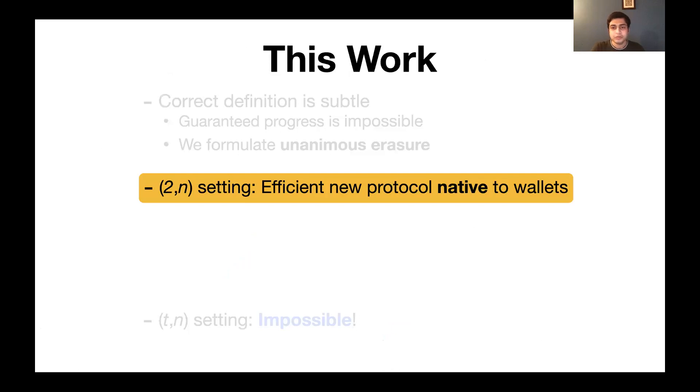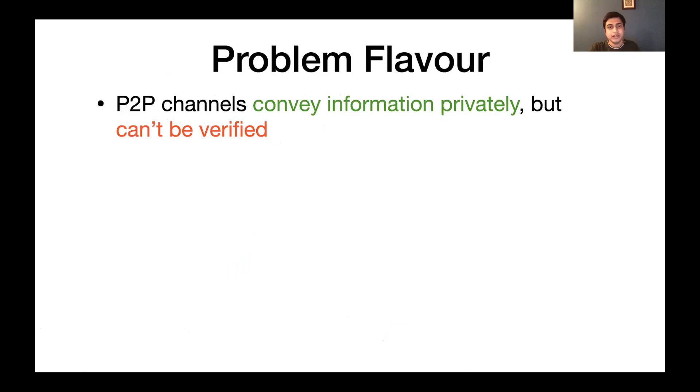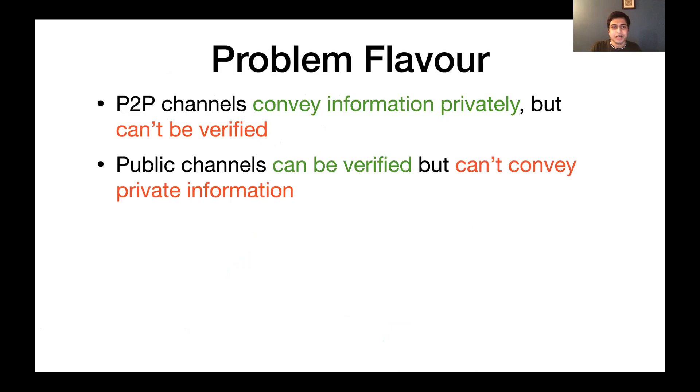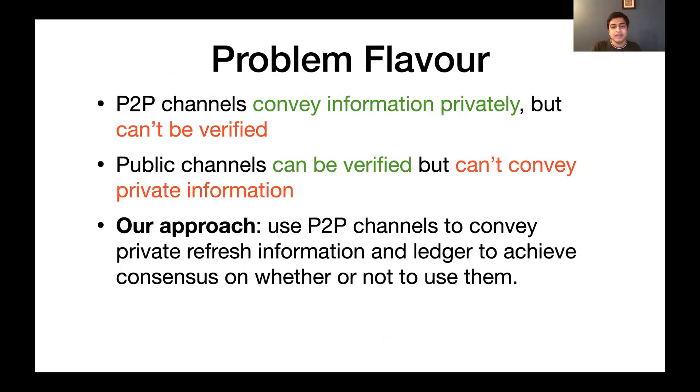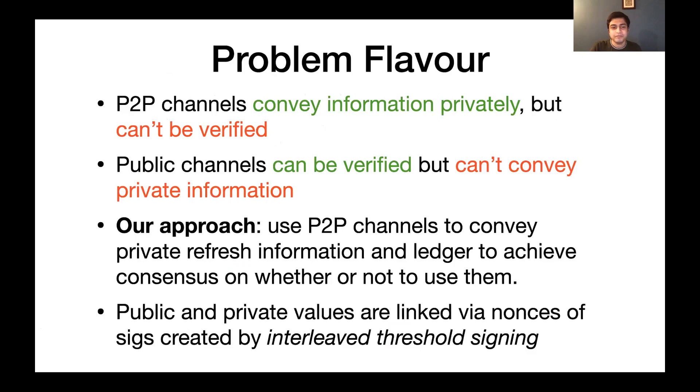Now we construct a protocol that achieves this notion in the 2-of-N setting. So the flavor of the problem is as follows. Point-to-point channels can convey information privately but can't be verified, while public channels achieve the exact opposite properties. So our approach is to use the point-to-point channels to convey private refresh information and a ledger to achieve consensus on whether or not to use them. Intuitively, we're going to link the public and private channels by the notion of threshold signature and our new technique of interleaved threshold signing.